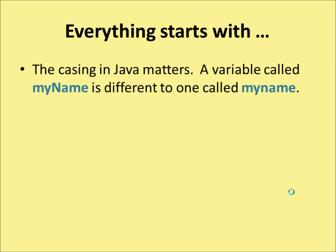Let's start at the beginning. The casing in Java matters — Java is case sensitive. So a variable called 'myName' with a capital N is different to one called 'myname' with a lowercase n. The casing matters and you'll have to get it exactly right. Nearly right will never work.